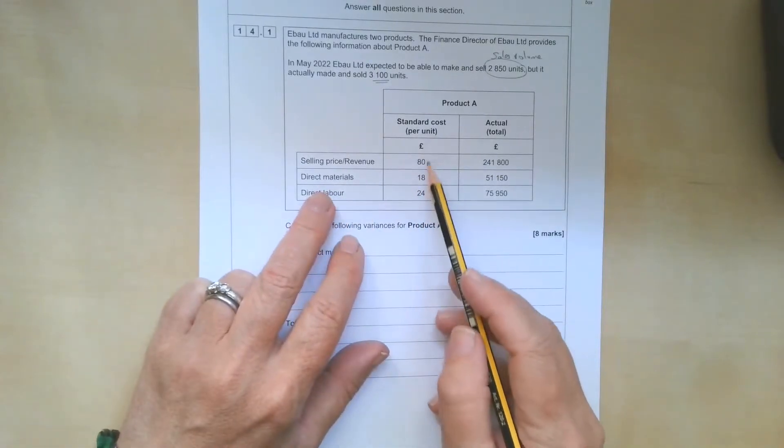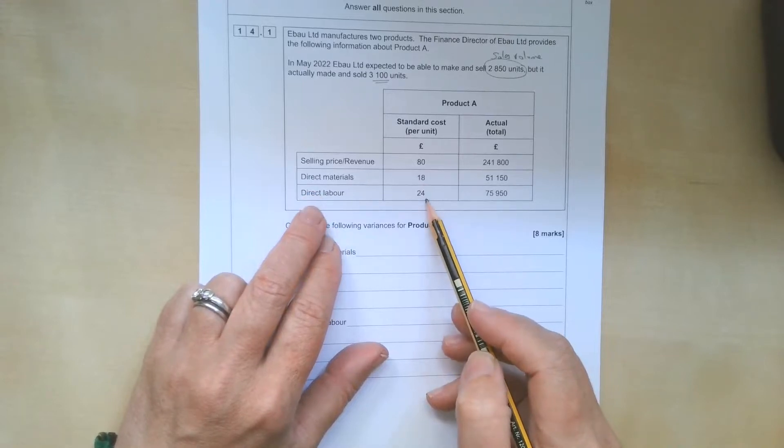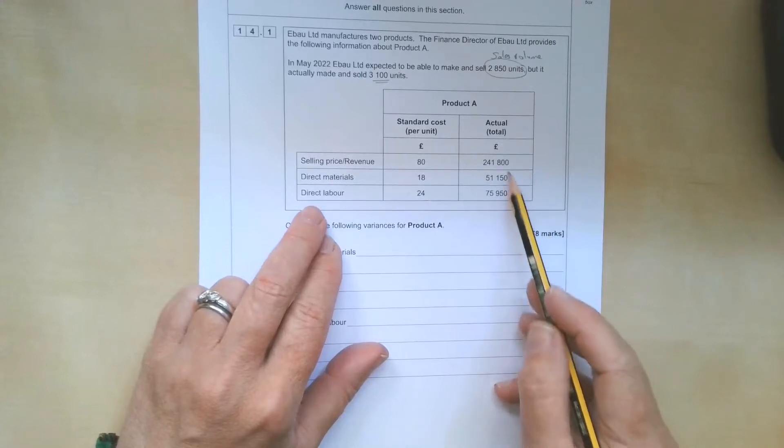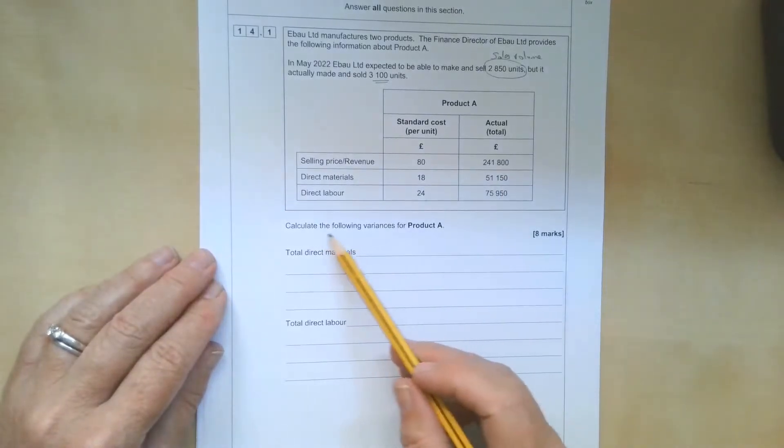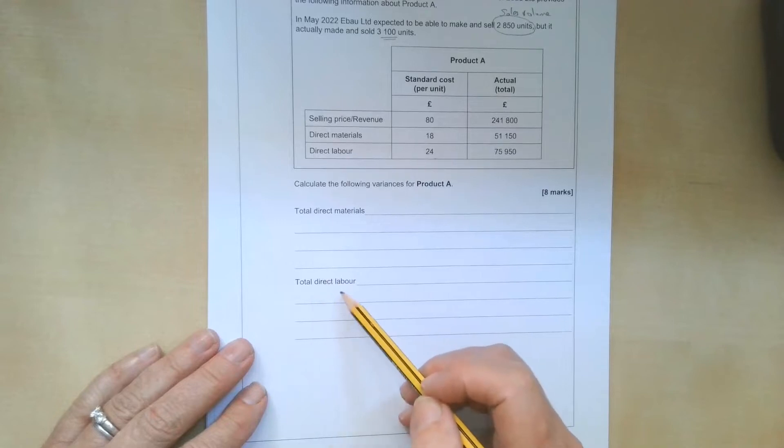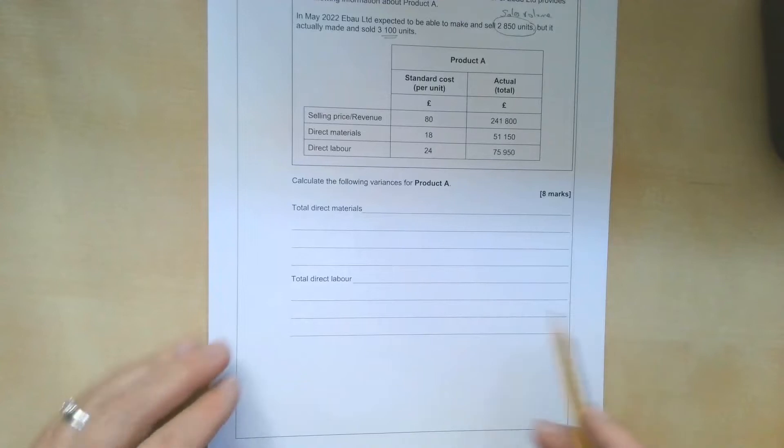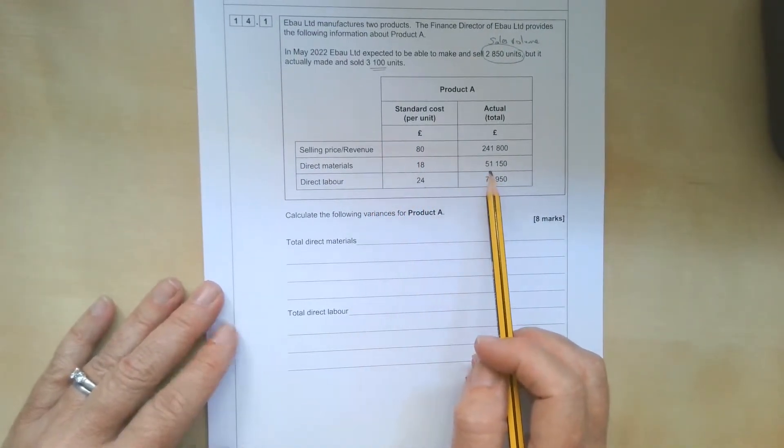So it gives us information here about the standard cost per unit. We expect it to sell for £80, direct materials £18, direct labour at £24. So we could work out contribution per unit. Then we've got some actual figures here, the actual sales and the actual amount paid for materials and labour. What we're asked to do, this is a bit unusual, rather than doing the materials price and usage and the labour rate and efficiency, we're being asked to work out the total materials variance and the total direct labour. So we've got to work out the standard cost of what we expected to pay for materials and compare that with what we did.